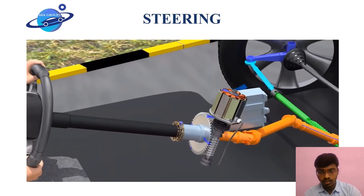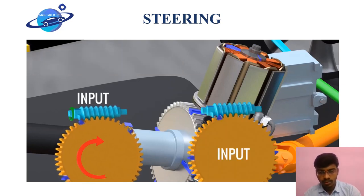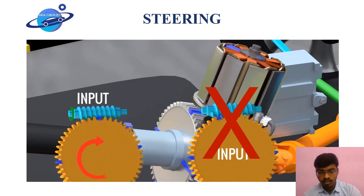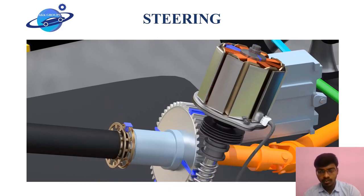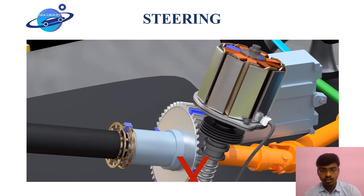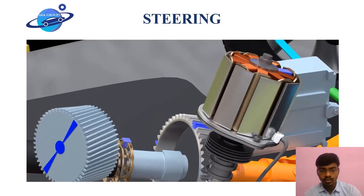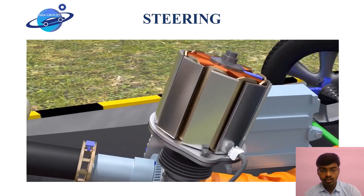However, consider what happens if the motor fails. A worm screw can turn a worm gear, but a worm gear cannot turn a worm screw. So if the motor fails, any manual rotation by the driver will be blocked by this worm drive constraint — the steering becomes jammed. To overcome this, the rotation from the steering wheel is never directly connected to the worm gear. Instead, it passes through a planetary gear set, where the driver's rotation is given to the sun gear.